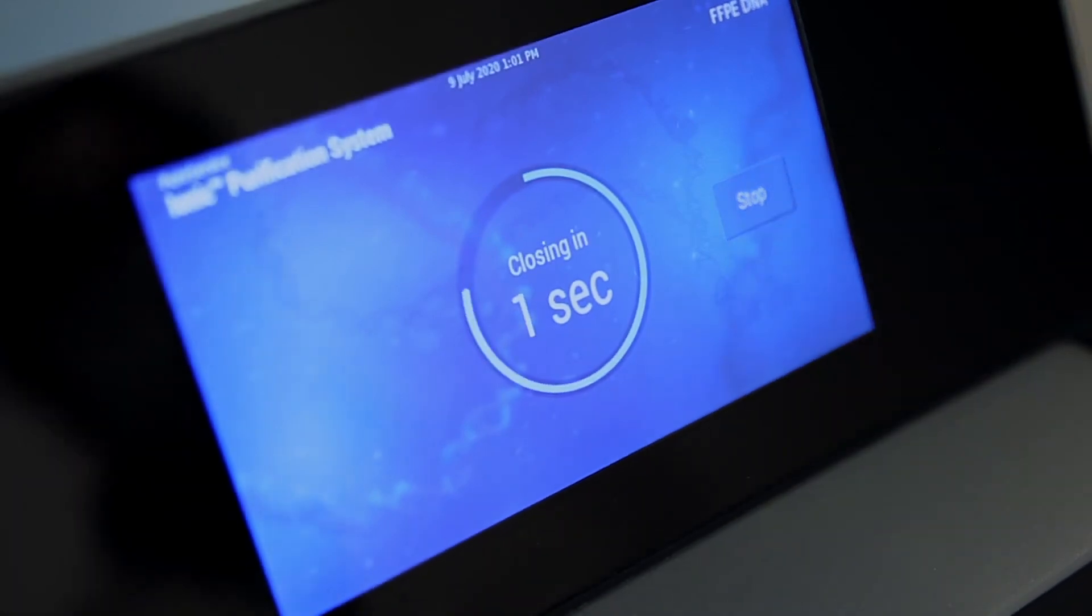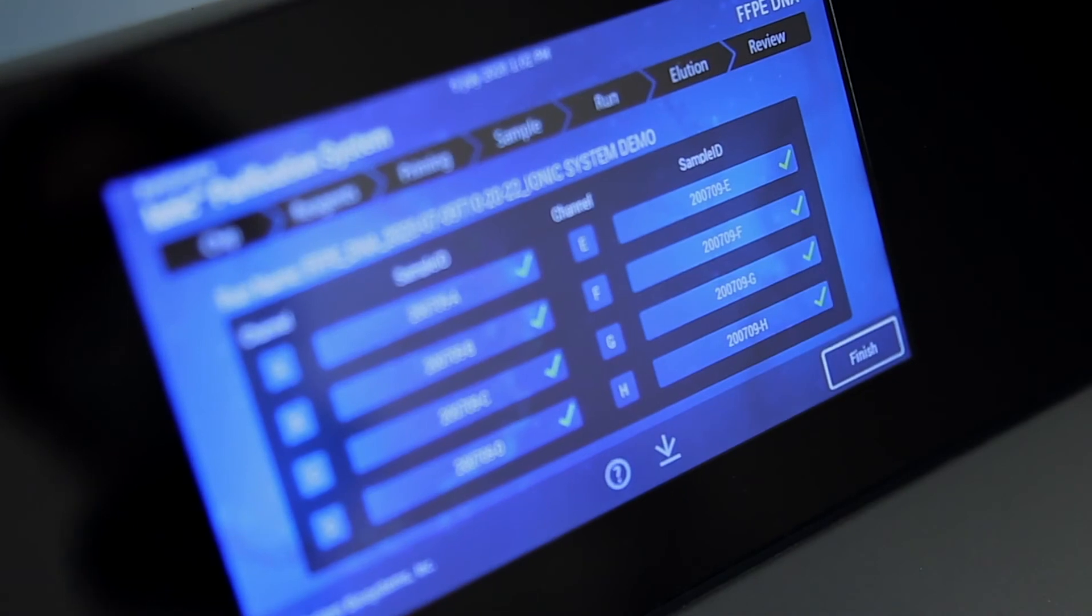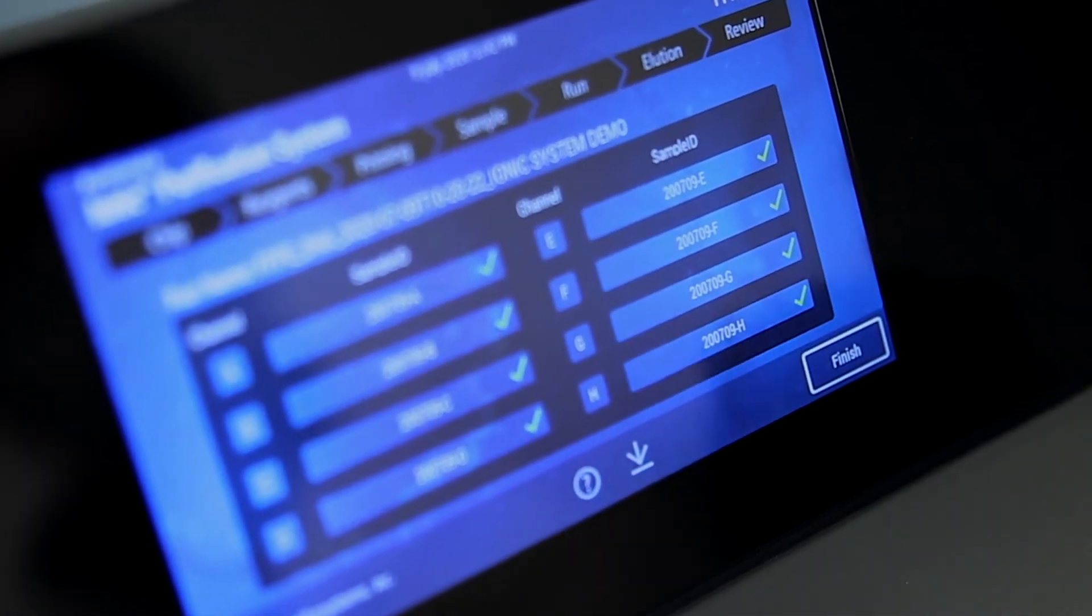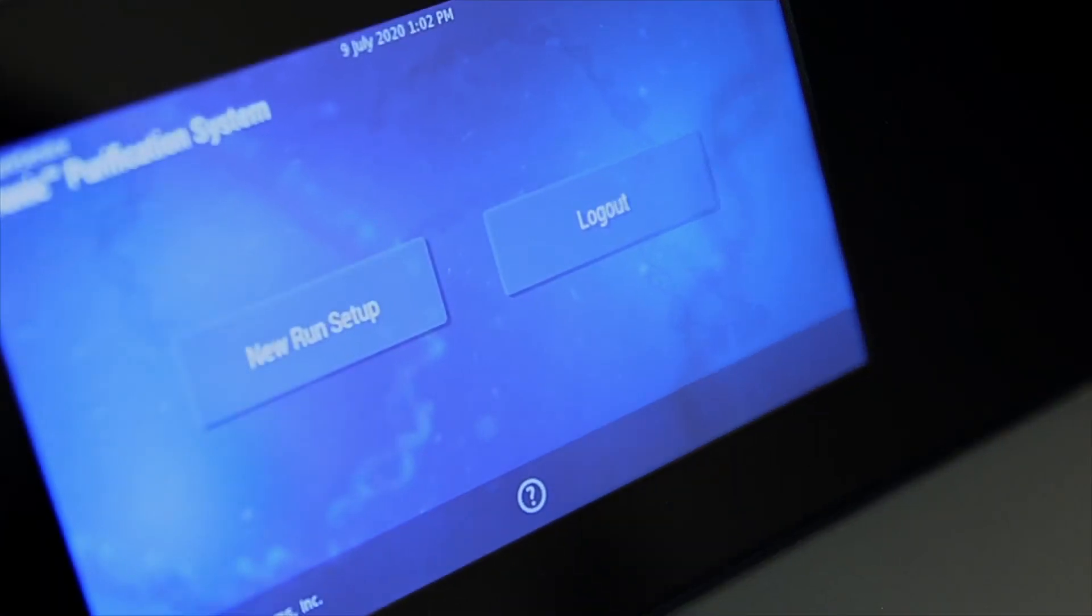Once the fluidic chip is removed, the touch screen displays the purification run result for each sample. The results can be saved to a USB flash drive. After pressing the finish button, the instrument is ready to start a new run.